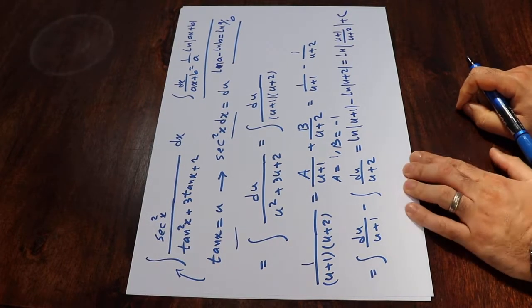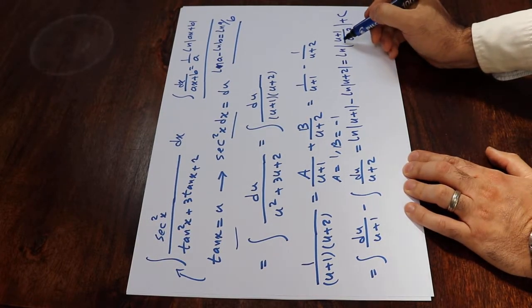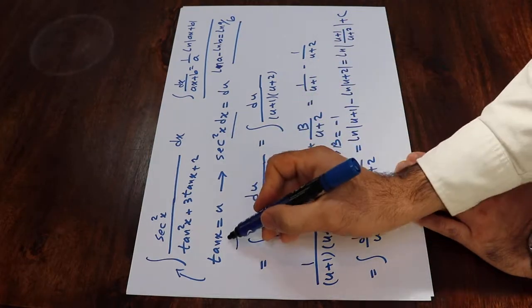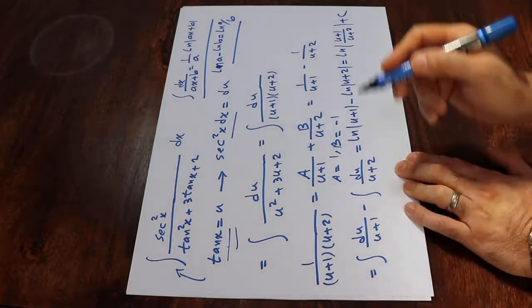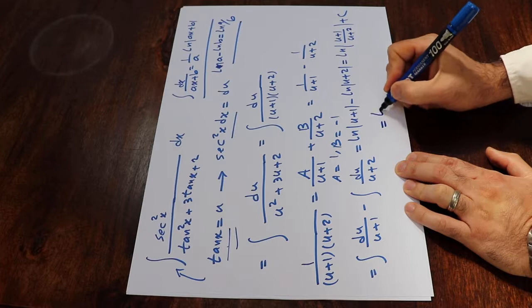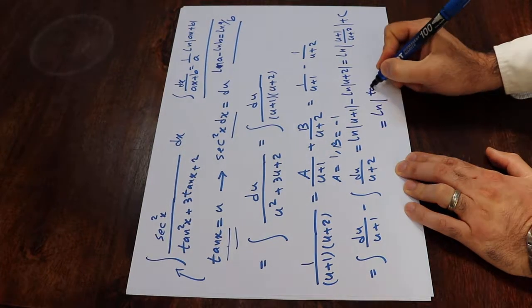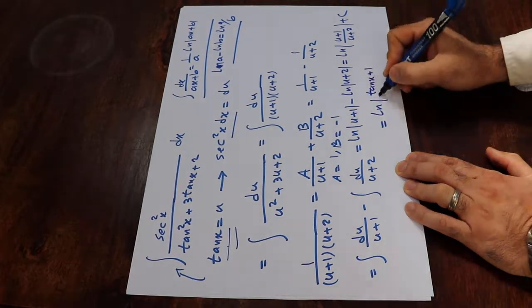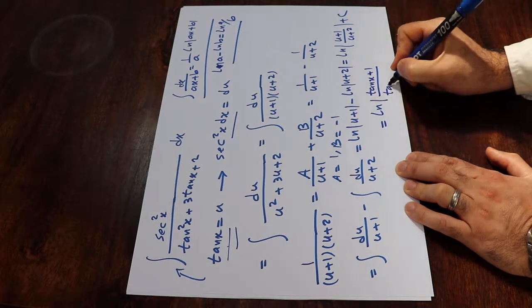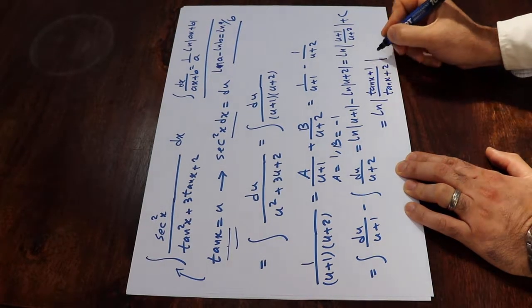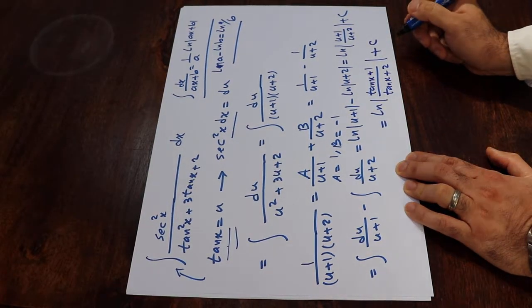So here, all you need to do is to substitute this integral u with the definition of the u, which was tangent x. Therefore, this one will be equal to ln tangent x plus 1 divided by tangent x plus 2 plus c, which is the constant of the integral. And that is the solution to our integral.